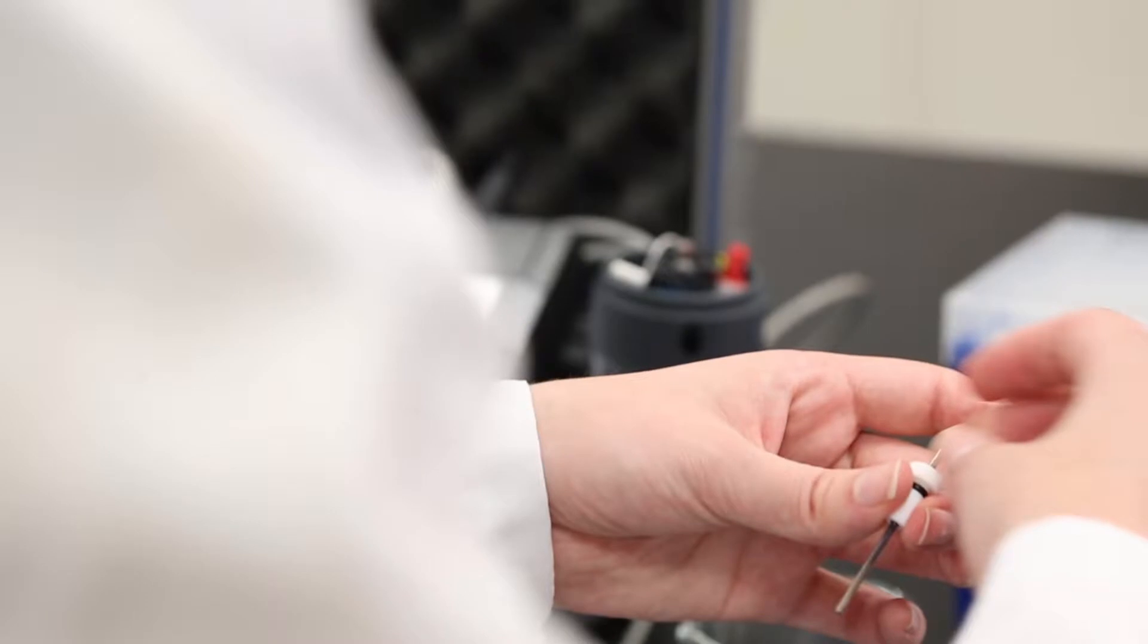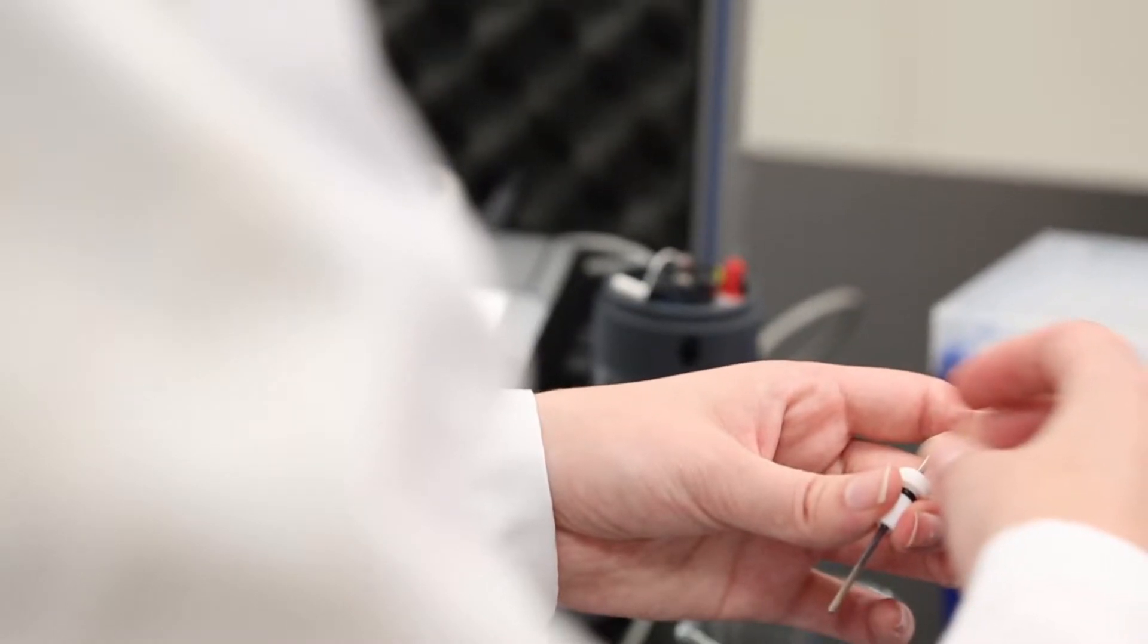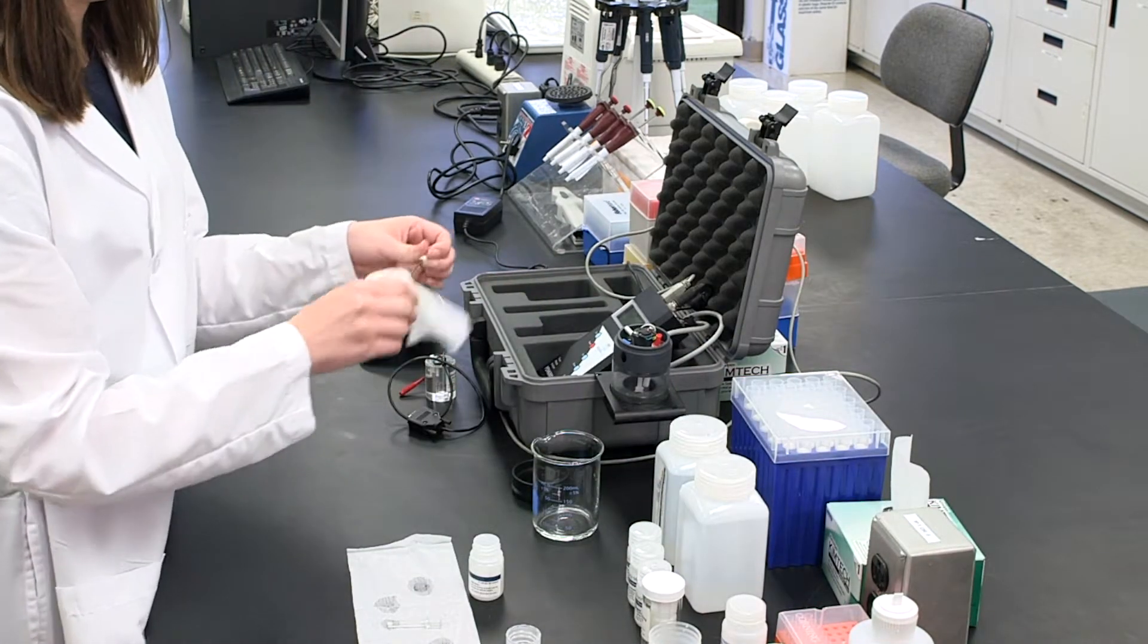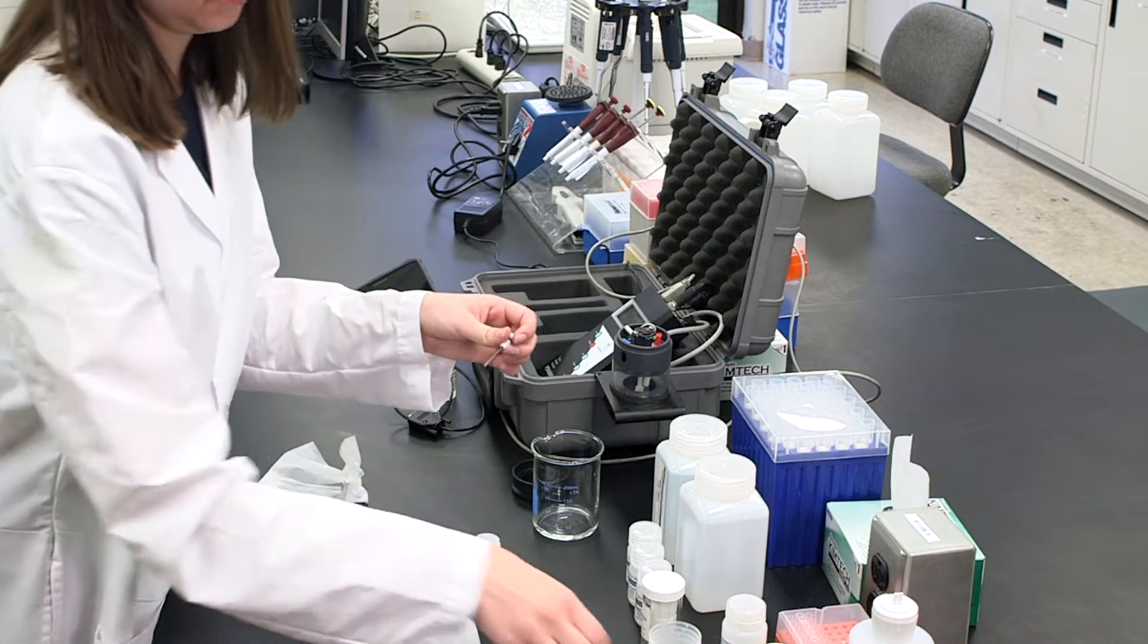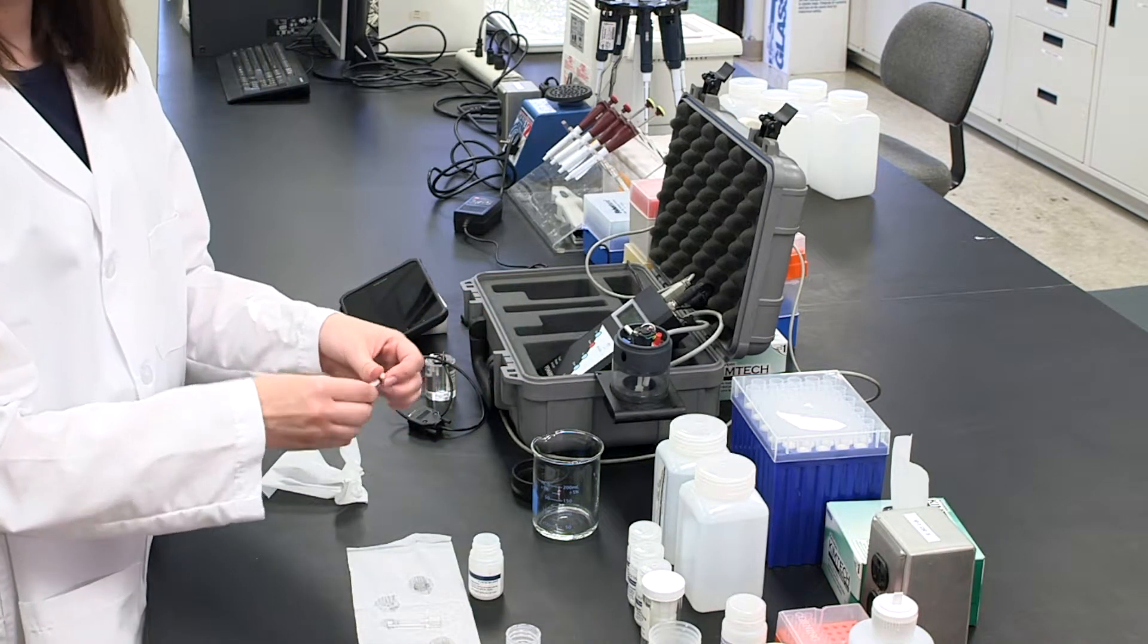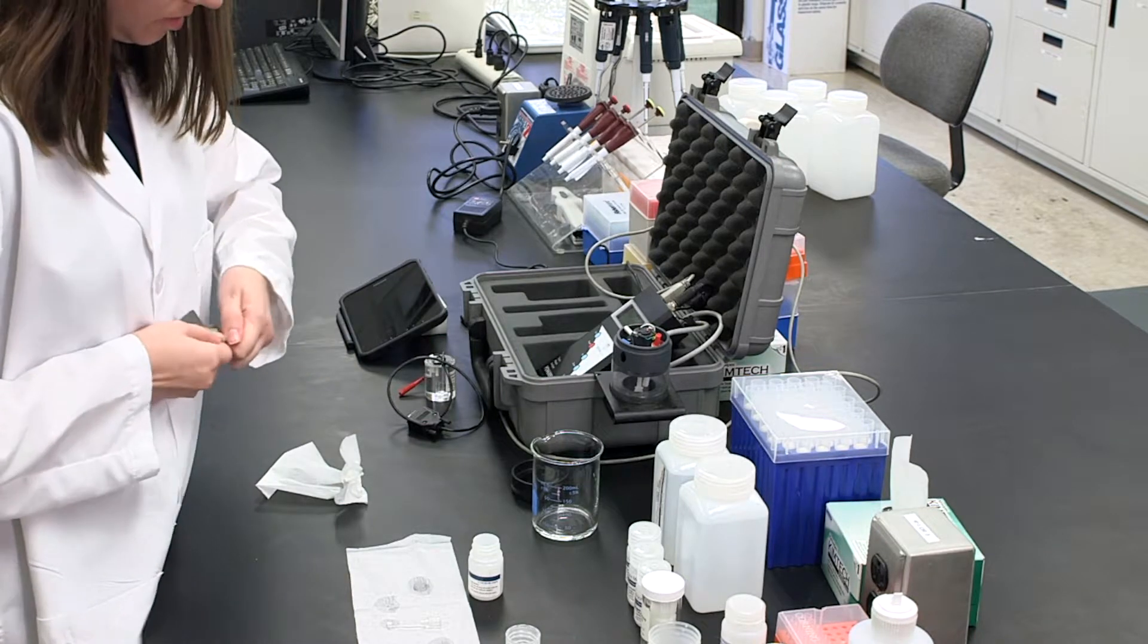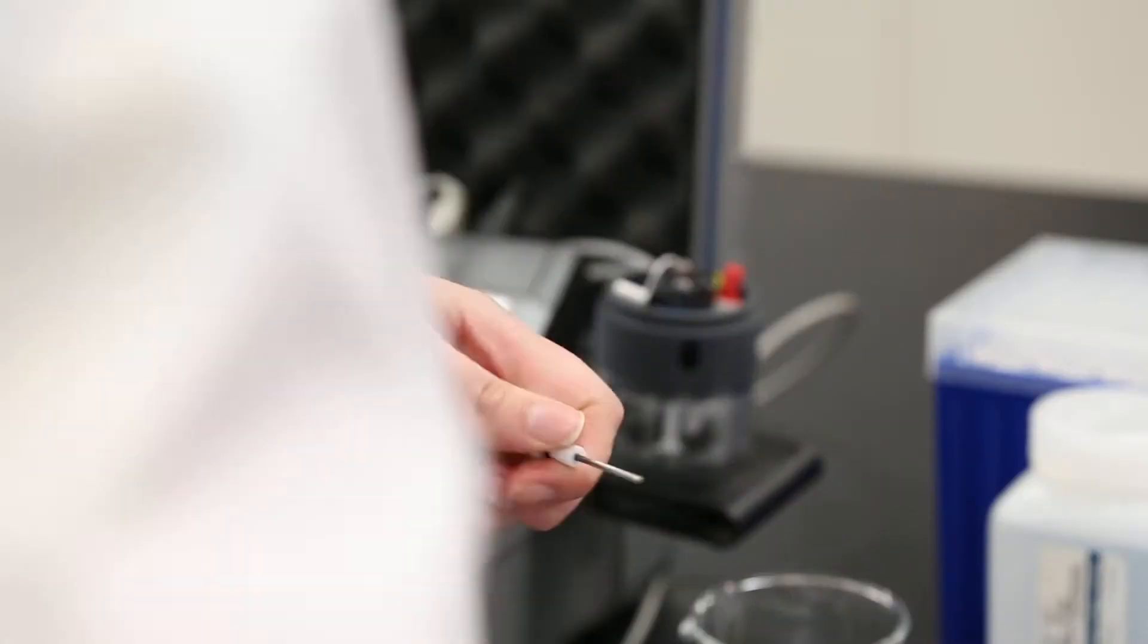When in use, check the condition of the plated silver electrode daily, as this component is critical to the correct operation of the system. If there are light patches or the plating is flaking off, then the silver rod should be cleaned back to shiny metal with the fine abrasive provided in the electrode care kit. It must then be replated as described in the PDV manual.